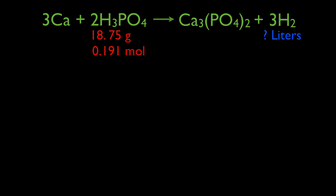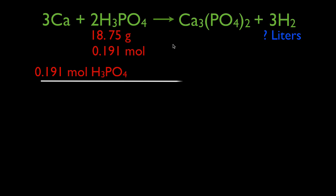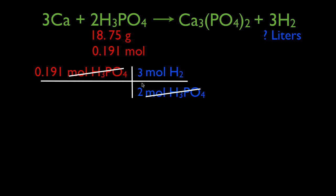Now we're going to do step two and step three together. We start with 0.191 moles of phosphoric acid. We're going to use our railroad tracks to convert using the molar ratio. We want to get out of moles of phosphoric acid — put that on the bottom — and into moles of hydrogen gas on the top. The molar ratio is two moles of phosphoric acid to three moles of hydrogen gas. So 0.191 times three divided by two equals 0.287 moles of hydrogen gas.